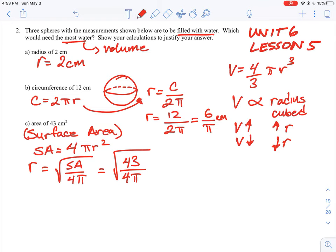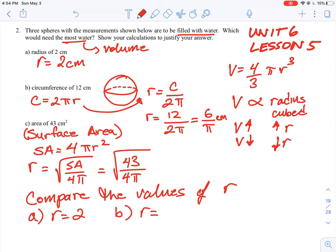So all we need to do now here to really accurately compare this is just compare the values of R in each case, and the biggest value of R is going to give us the biggest volume. We don't have to calculate it, we just need to know which one is bigger, because volume is in proportional to it. So A, R is equal to 2. B, if you take your calculator and work out what R is, it's going to be 6 divided by pi, but we'll compare it as a decimal, it's about 1.91, depending on how many decimals you take it for accuracy. And then when we do R for part C, 43 divided by 4 times pi, take the square root of that, we find out R is equal to around 1.85.